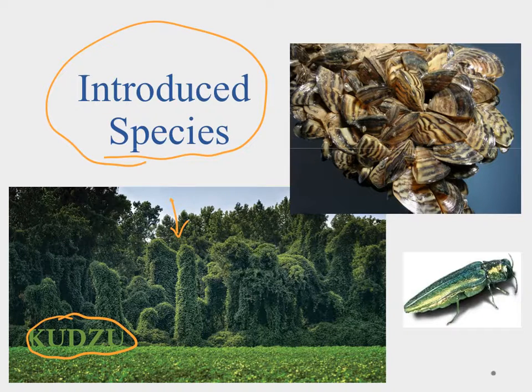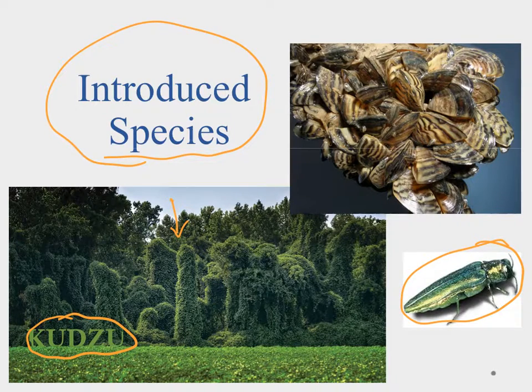Another example is the emerald ash borer. That one came in through wood products — we didn't even know it came. And now it's going through trees and decimating our forests.